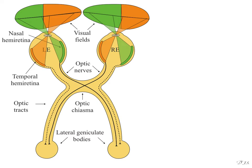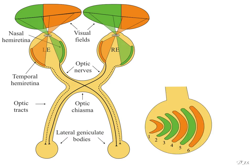The lateral geniculate body is a six-layered structure — layer 1 is most ventral and layer 6 is most dorsal anatomically. Fibers from both temporal hemiretinas project to layers 2, 3, and 5 of each side of the lateral geniculate body, and fibers from both nasal hemiretinas terminate contralaterally in layers 1, 4, and 6 of each lateral geniculate body.